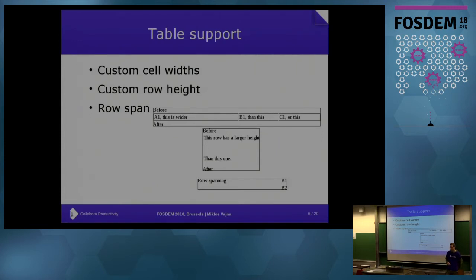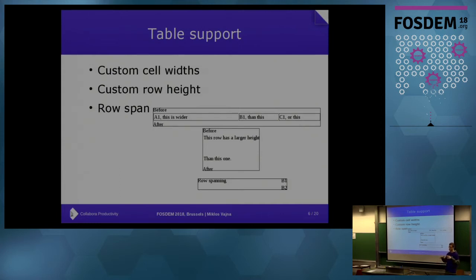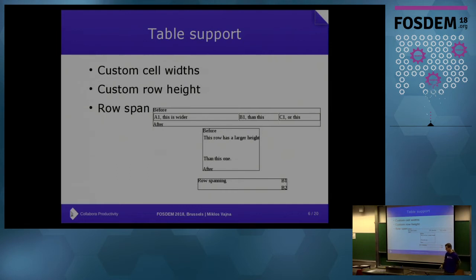There is also table support, where you can have a set of properties on the table itself — from the Writer perspective that means rows, and inside the rows you have cells — so you have table properties, row properties, and cell properties. From a higher level you also have column properties, and then you can have row spans, column spans, and various other properties.